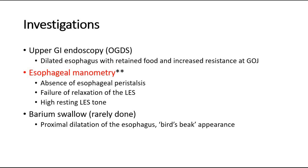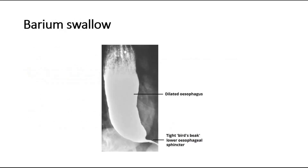Another investigation is the barium swallow, which is rarely done now. It may show proximal dilation of the esophagus with a characteristic bird's beak appearance distally, due to the failed dilation of the lower esophageal sphincter. This is a picture of the barium swallow in a case of achalasia, showing the bird's beak appearance.